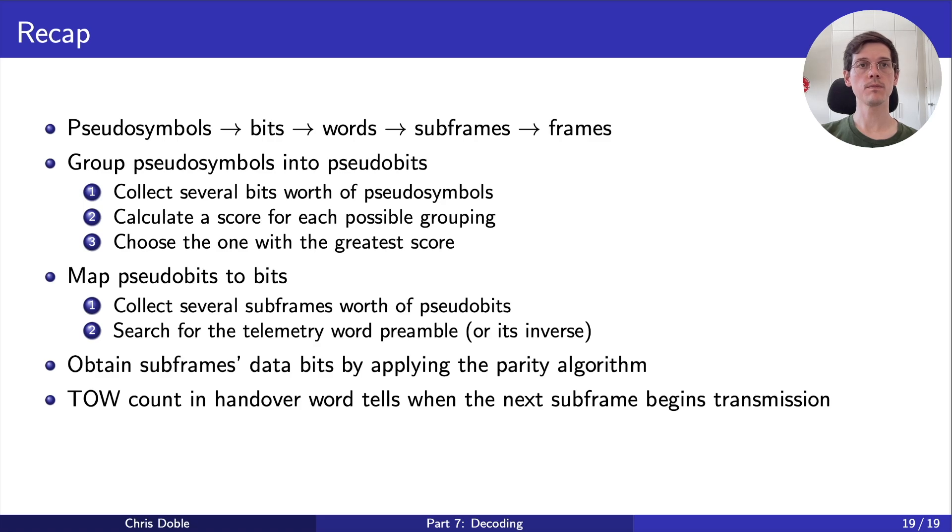And finally, the five different subframes contain different parameters. But for our basic receiver, we're only interested in subframes 1, 2, and 3. In the next video, we'll cover the fifth and final stage of the GPS receiver implementation. Solving. We'll learn how to take all of this information that we've decoded, and use it to determine our location.